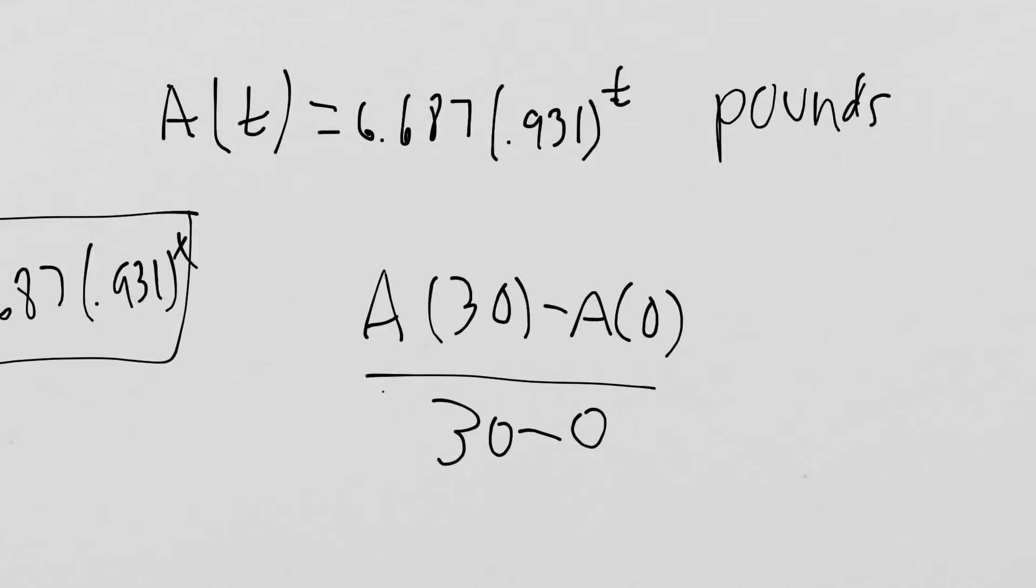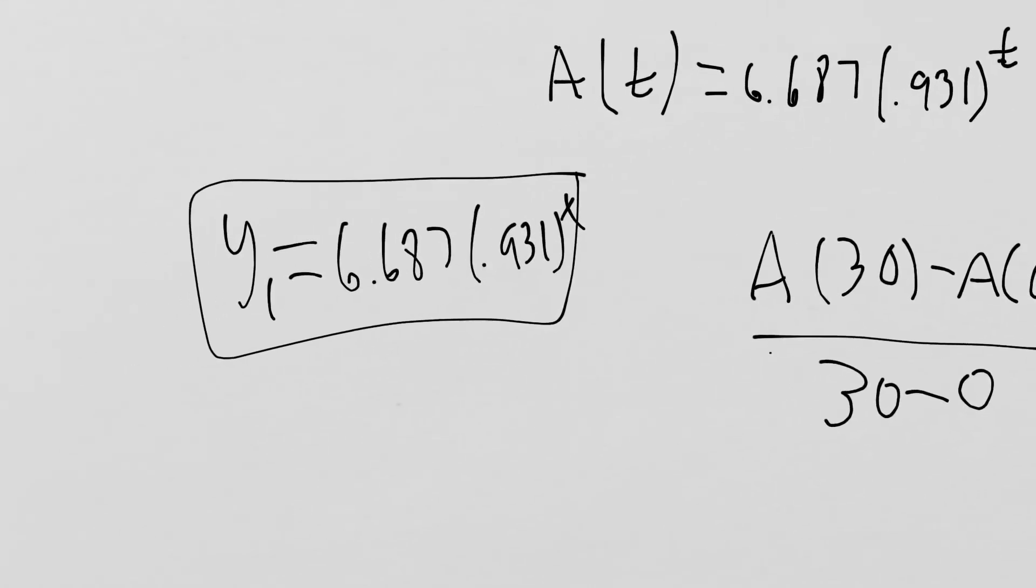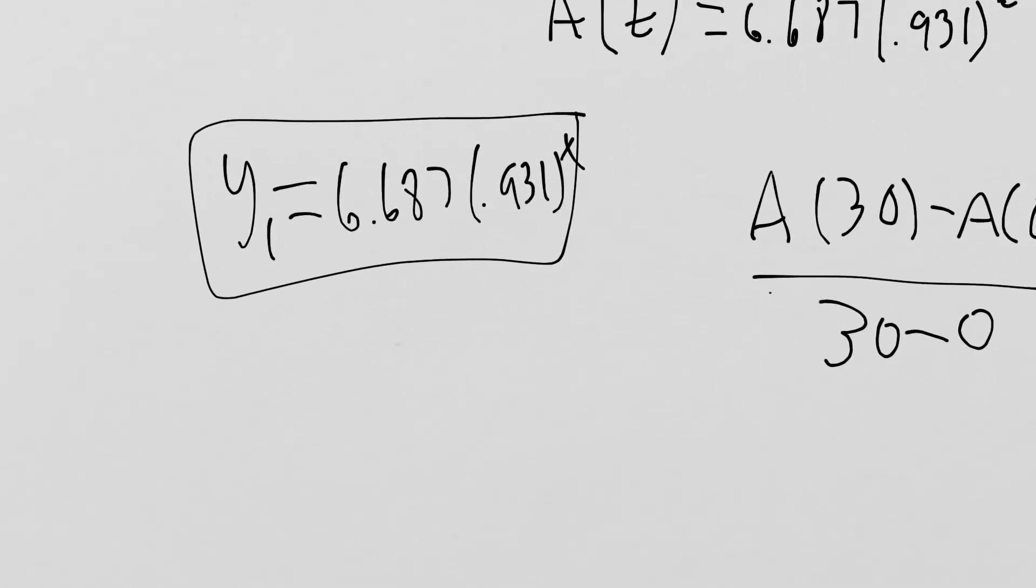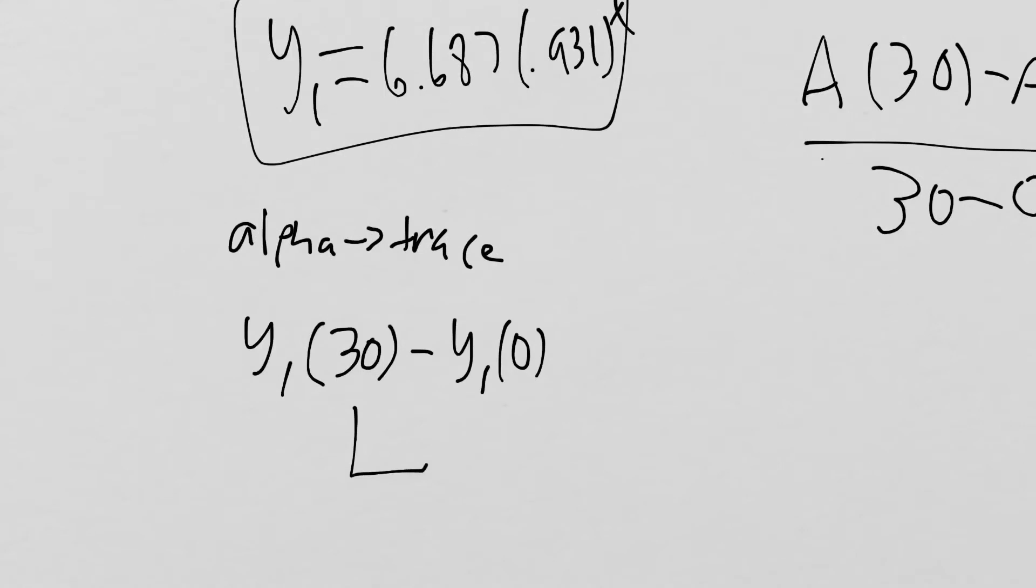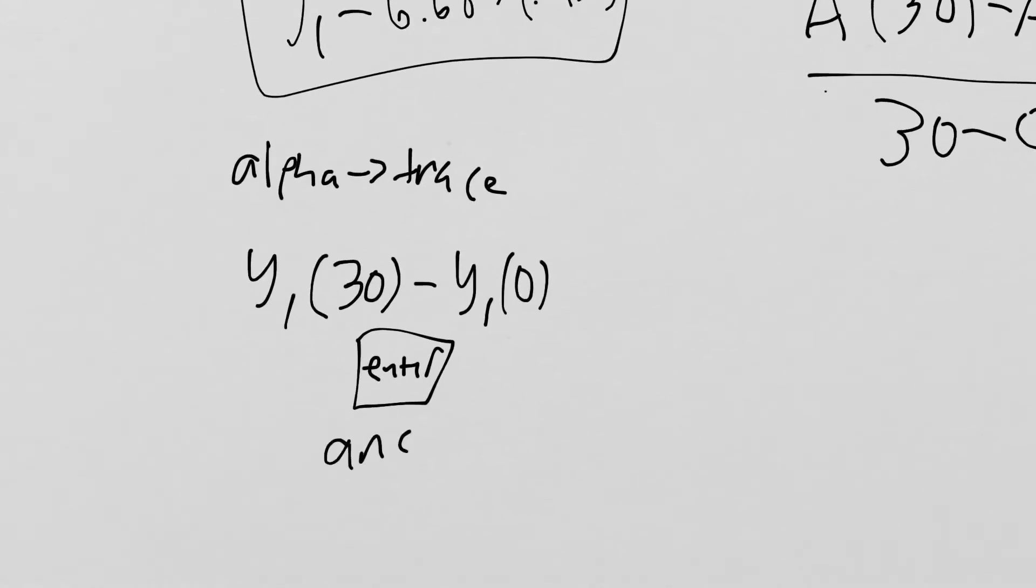The easiest way for us to do this, since we have it plugged into our Y1, is to do alpha trace. If alpha trace doesn't work, you might have to look up for your calculator how to get to the Y menu. That should pull up all the Ys. You can just paste Y1(30), and then do it again and do Y1(0), and then just hit enter. Then divide your answer by 30 minus 0, which is just 30.